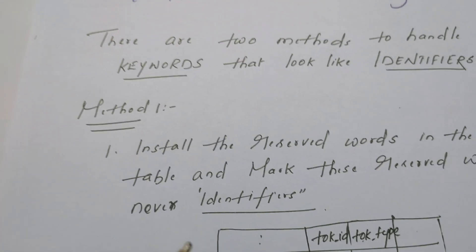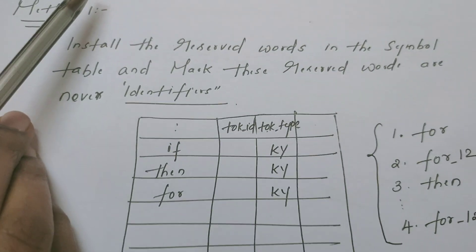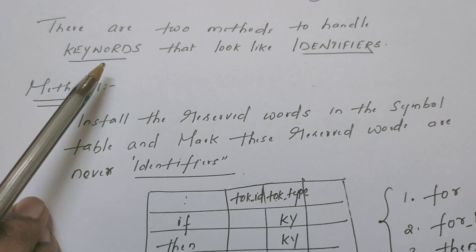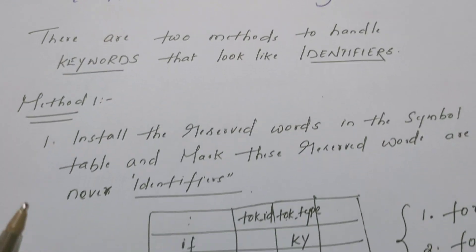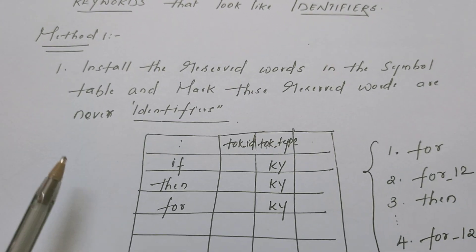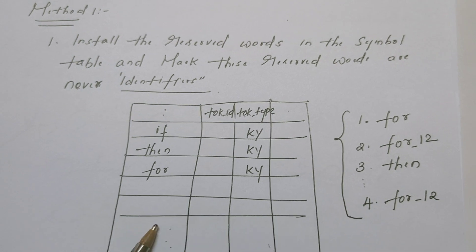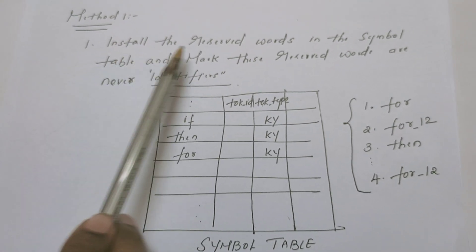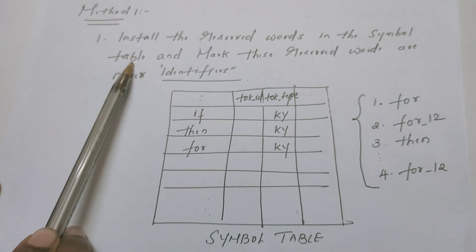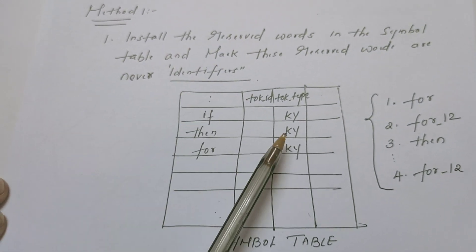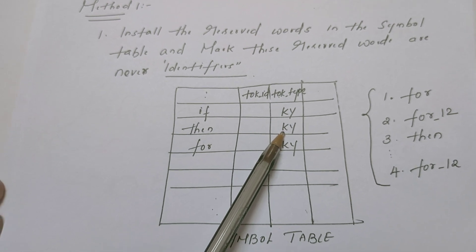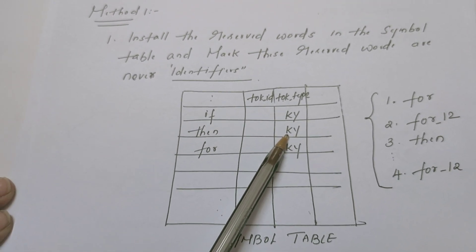So what is the solution for that? There are two methods to handle the keywords that look like identifiers. In method one, we are going to install all the reserved words in the symbol table, and at the same time, we are going to mark those reserved words as not ordinary identifiers — those are keywords.